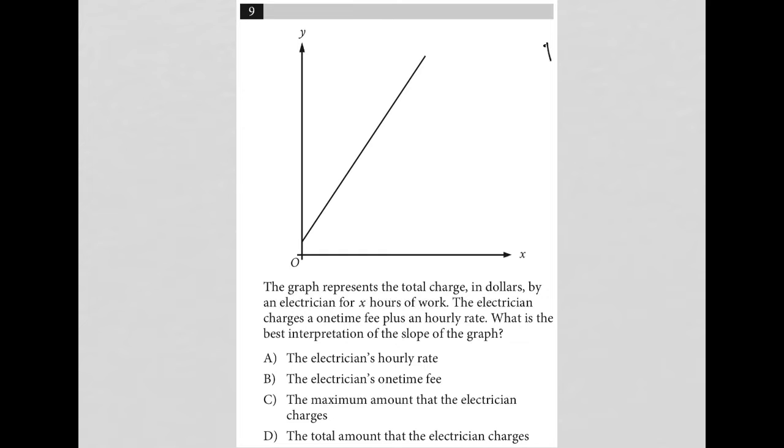So this question is a diagram question. We have a graph here, a linear graph provided for us. There's no labels for x or y axis. So let's read this and figure out what is this graph showing us?